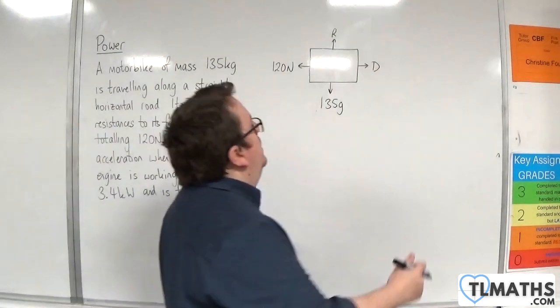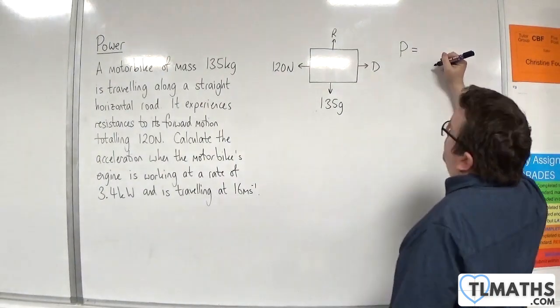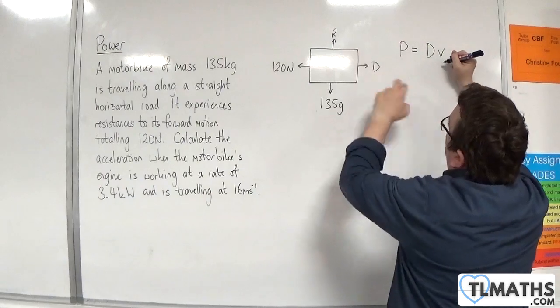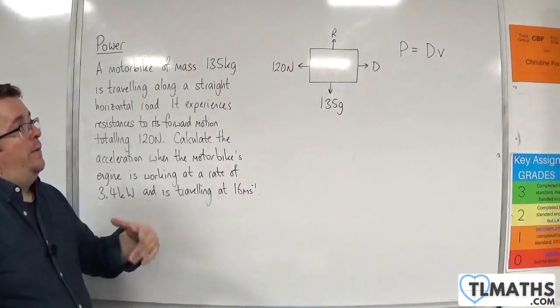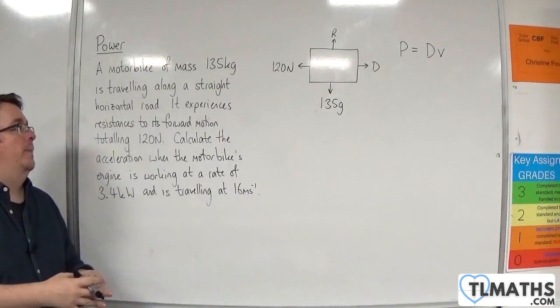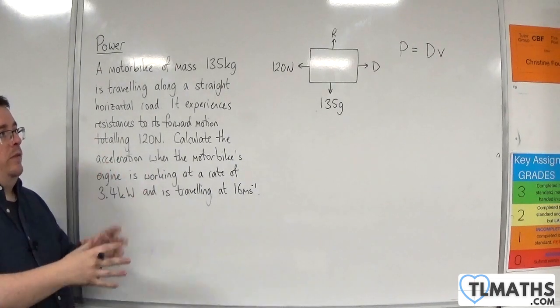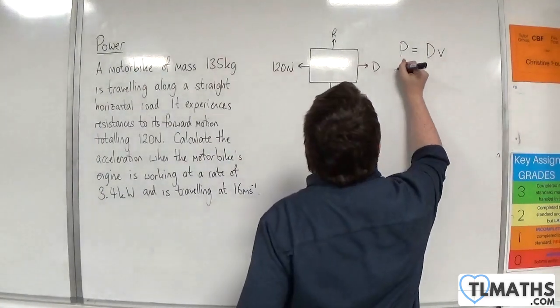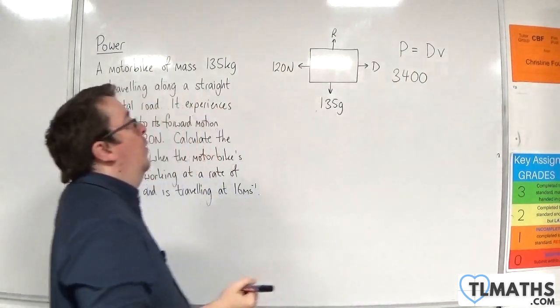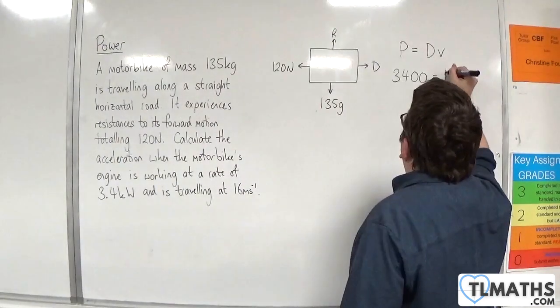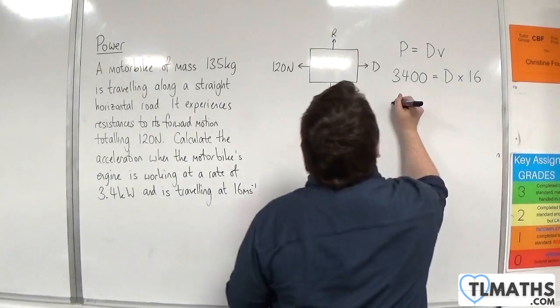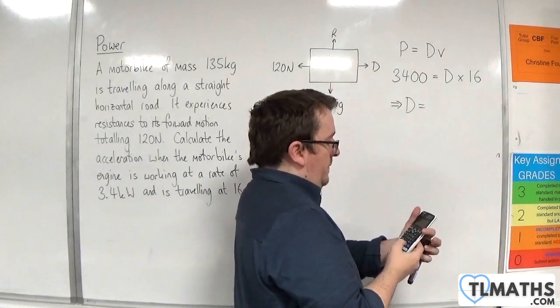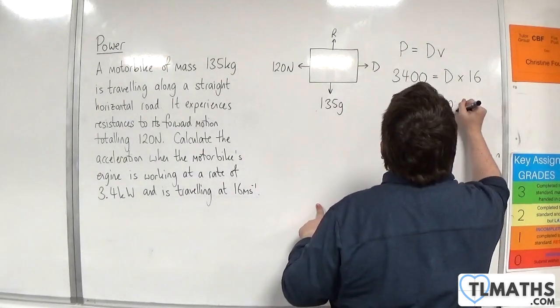Now we know that power is equal to the force times the velocity. So that will be equal to the force from the engine, the driving force, times by the velocity. So in a lot of problems you're going to deal with the power is equal to the driving force times the velocity at that time. So what we have is the power 3.4 kilowatts. So that's 3400 watts. And that's going to be equal to d times the velocity which is 16 metres per second. So the driving force is 3400 divided by 16 which is 212.5 newtons.